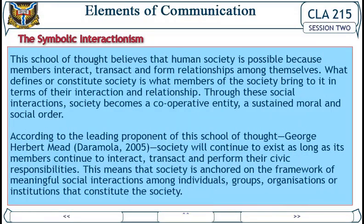Symbolic interactionism: this school of thought believes that human society is possible because members interact, transact, and form relationships among themselves. What defines or constitutes society is what members bring to it in terms of their interaction and relationships. Through social interactions, society becomes a cooperative entity — a sustained moral and social order. According to the leading proponent of this school of thought, George Herbert Mead (Dara Mola, 2005), society will continue to exist as long as its members continue to interact, transact, and perform their civic responsibilities. Society is therefore anchored on the framework of meaningful social interactions among individuals, groups, organizations, and institutions.